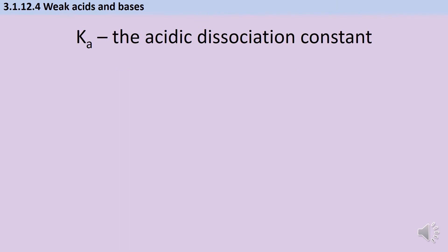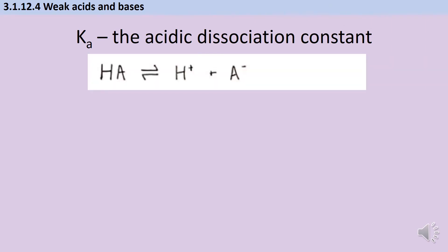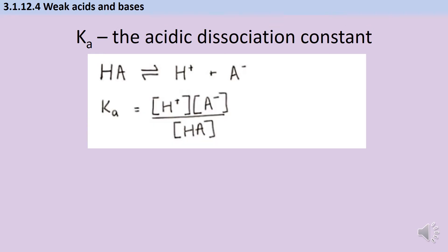You've already met some other examples of equilibrium constants like Kc and Kw, the ionic product of water, which we met in video number three. When an acid dissolves in water, the undissociated acid splits up to make hydrogen ions and anions. We can write a special version of Kc called Ka for acids. We use square brackets to represent concentration, and as with all equilibrium constants, the products always go on the top.